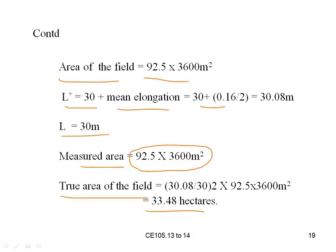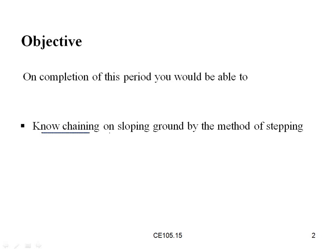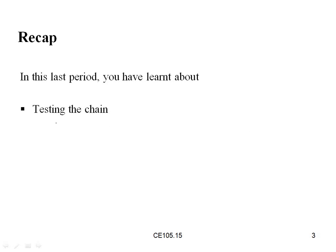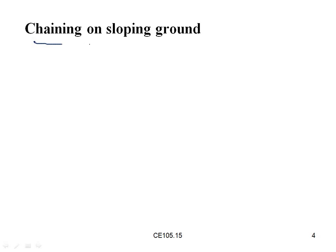These are the problems regarding errors in chain length. The next topic is chaining on sloping ground by the method of stepping. In the previous class we learned the testing of chain, adjusting the chain, and correction of error in chain length.